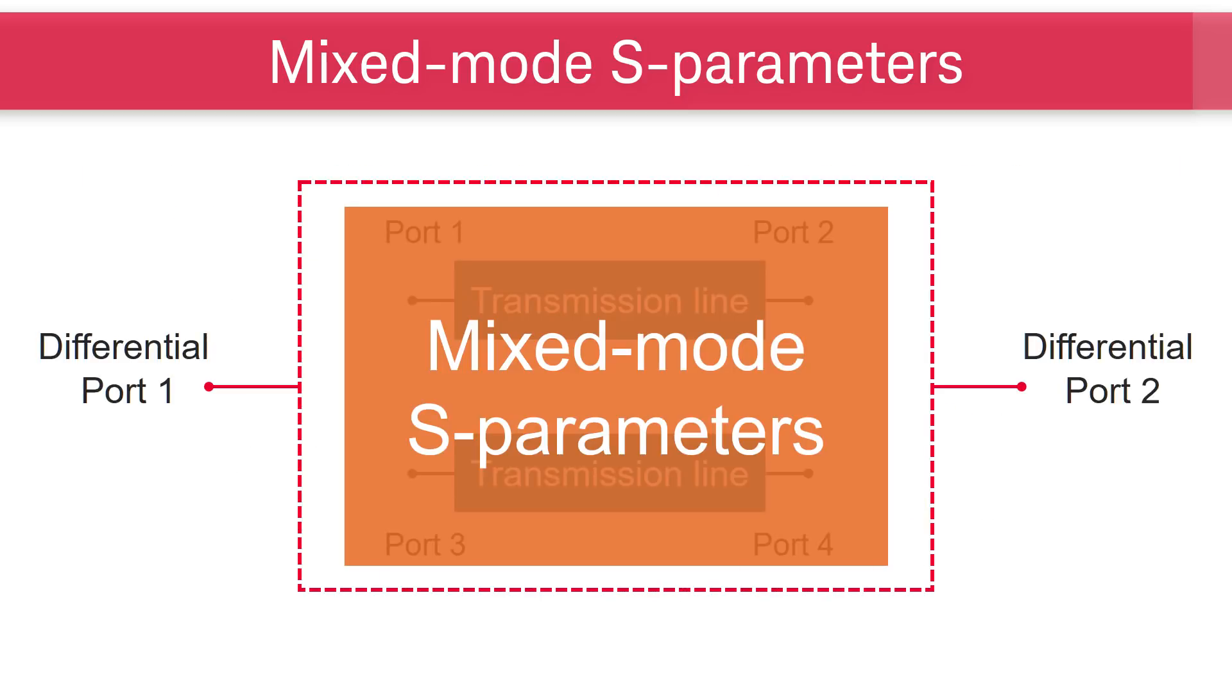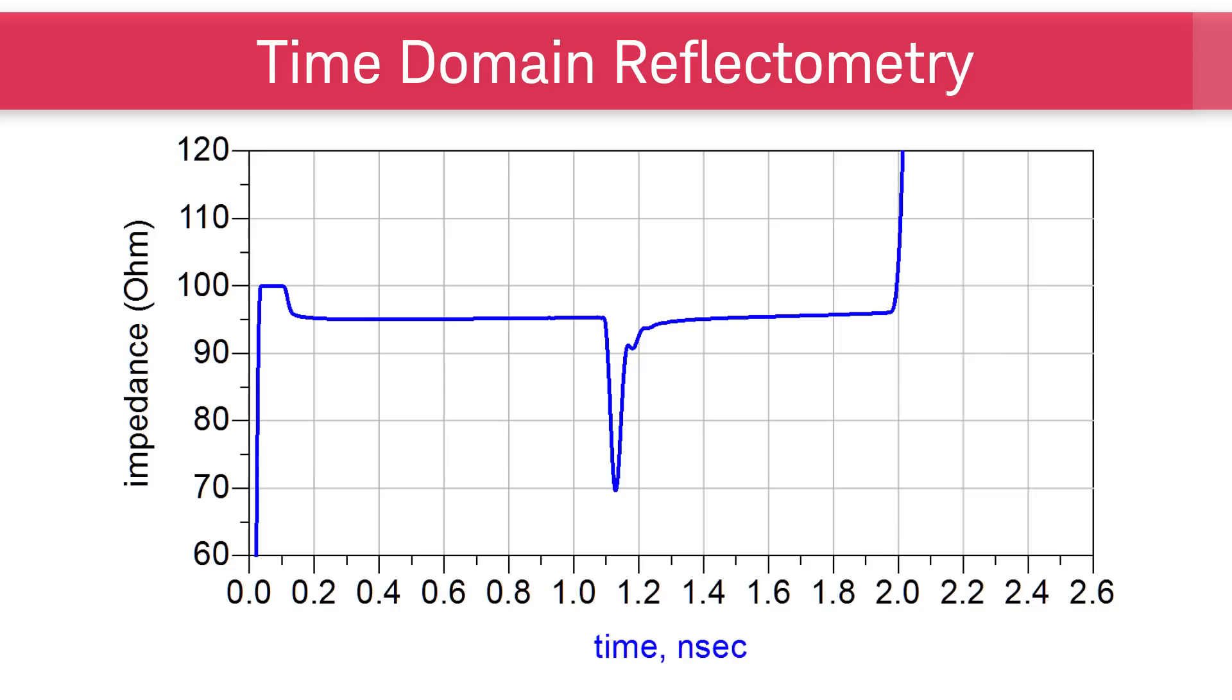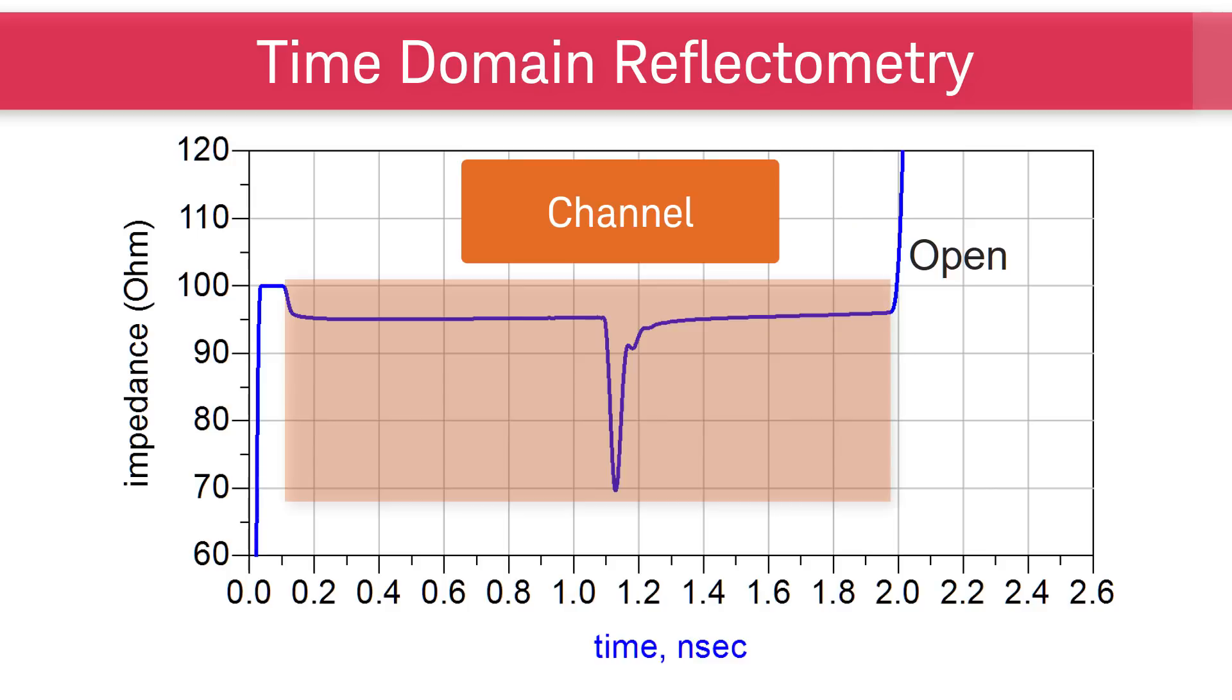As S-parameters tell us the frequency response of the channel, we will use time domain reflectometry, TDR, for the spatial and timing information. On this TDR impedance plot, the right-hand side is the open circuit to help us identify the end of the channel.